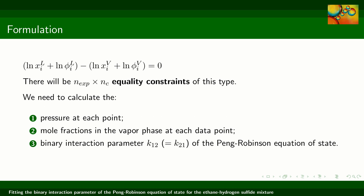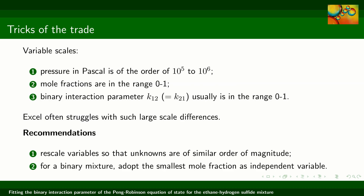The unknowns in this problem will be the pressure at each point, the mole fractions in the vapor phase, and the binary interaction parameter k12 of the Peng-Robinson equation of state, noting that the k12 and k21 parameters are equal in this model. The pressure is of the order of 10 to the power 5 or 10 to the power 6 in Pascal. The mole fractions in the vapor phase are between 0 and 1, and the binary interaction parameter of the Peng-Robinson model is a number close to 0, typically in the range from 0 to 1.